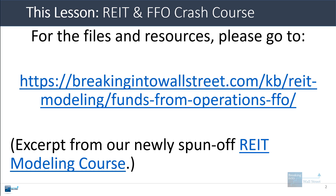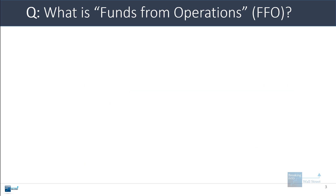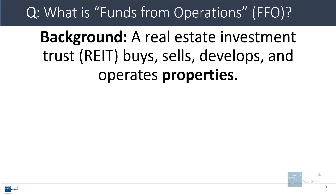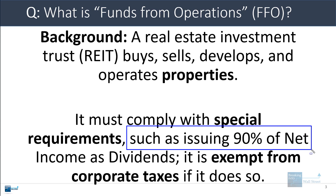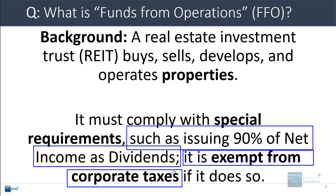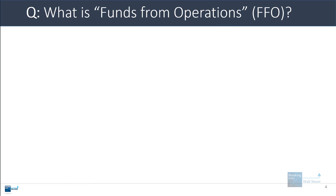This is an excerpt or sample from that course. As background: a real estate investment trust or REIT buys, sells, develops, and operates properties such as office buildings, apartment buildings, retail buildings, or hospitals. Normal companies can do this too, but a REIT must comply with special requirements — the most famous being that it must issue 90% of its net income as dividends in the US, which exempts it from corporate taxes.